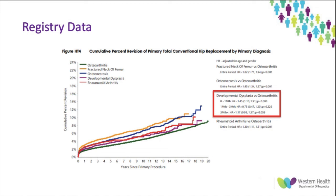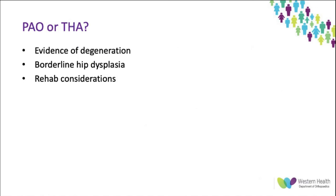There is some dysplasia data in the registry worth noting: developmental dysplasia is the fourth most common principal diagnosis in total hip arthroplasties performed in Australia, and primary total hip arthroplasty for developmental dysplasia has a higher revision rate in the first year than for primary total hip arthroplasty for osteoarthritis. When deciding between periacetabular osteotomy and arthroplasty, the key question is whether the patient has evidence of degeneration. Joint preserving surgery is not so much an alternative to arthroplasty as it is simply no longer indicated when there are signs of wear in the joint.